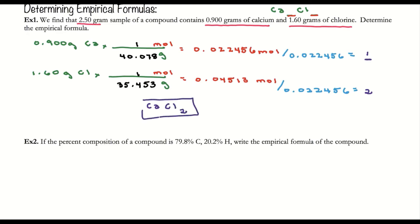One thing to note: if instead of getting a two, let's say I got 1.5, how could I make 1 and 1.5 whole numbers? If I had 1.5, I could multiply both by 2, so the calcium subscript would become 2 and the chlorine subscript would become 3.